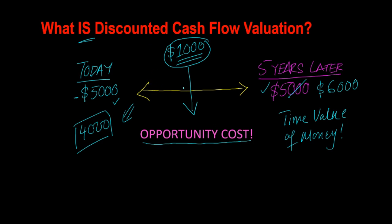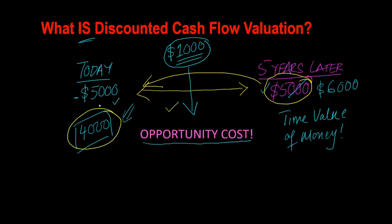Put very simply: when someone is offering you some amount in the future, it is less valuable to you today because there is an opportunity cost involved. As you are waiting for that amount to come in, you're paying a cost in terms of what else you could have done. Therefore, you discount it — which means it is worth less to you. Put another way, a dollar today is always going to be worth more to you than a dollar tomorrow, because a dollar tomorrow doesn't account for anything else you could have done in the meantime while waiting for that dollar to come in.